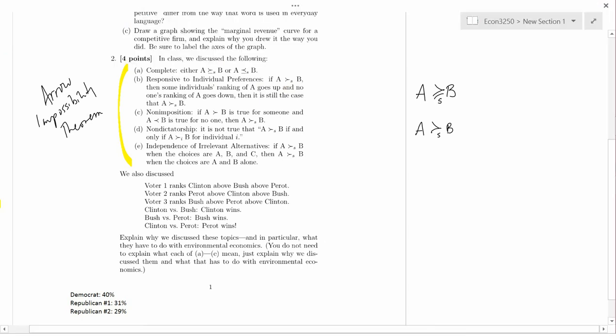Next one is non-imposition. If A is preferred to B by someone, and B is preferred to A is true for no one, then society's going to pick A. Non-imposition means you're not imposing preferences from outside of society, you're taking the preferences of the people who live in the society. It's somewhat similar to B. If there's some people that like A, that strictly like A better than B, and nobody strictly likes B better than A, then society's going to go for A.